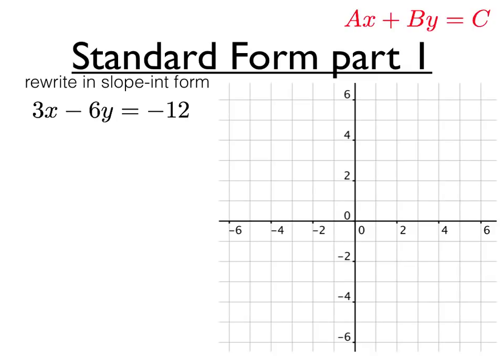There are two ways to graph standard form equations. Here we have an equation 3x minus 6y is equal to negative 12. Right now it follows Ax plus By equals C.